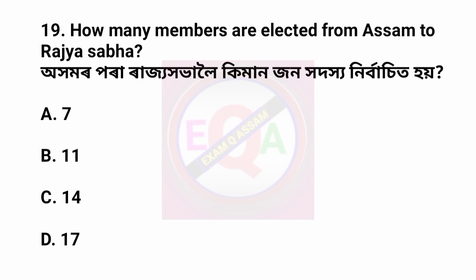Question number 19. How many members are elected from Assam to Rajya Sabha? Aakumarapra Rajya Habhaalui — Kimanjan khadatsthan nivrasita har — Huljhaapsyan hao? Option D — Seven.